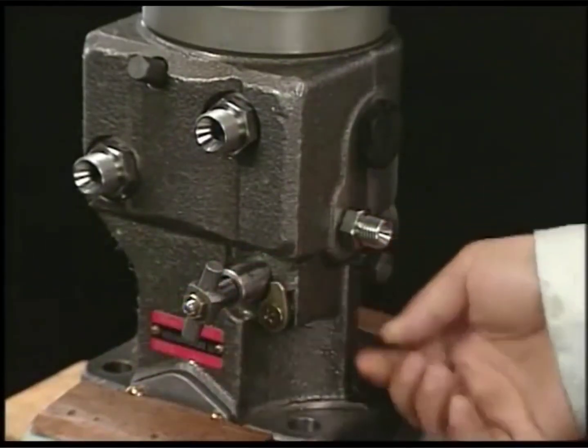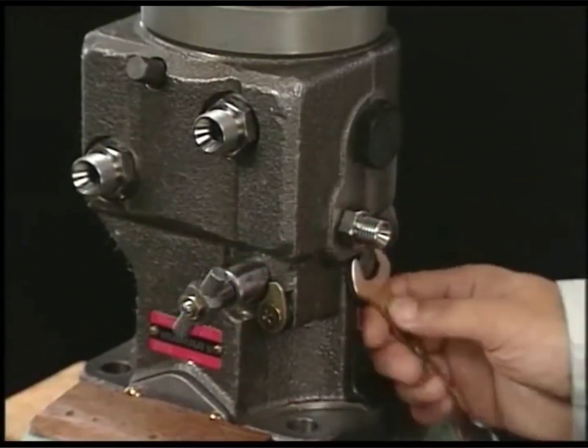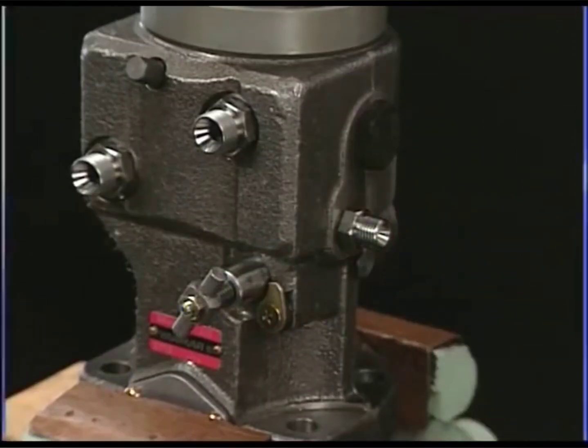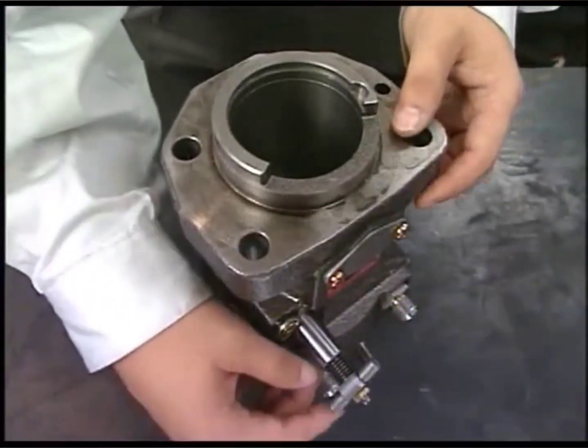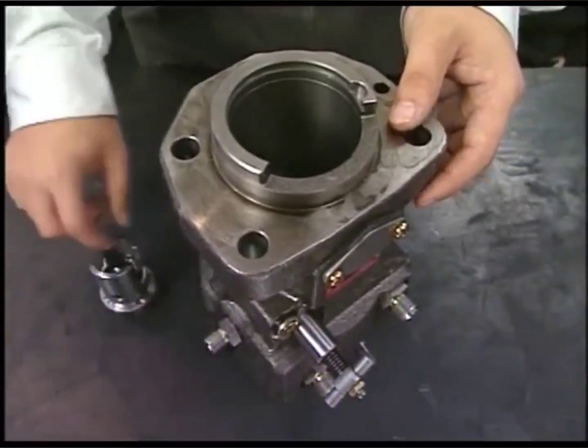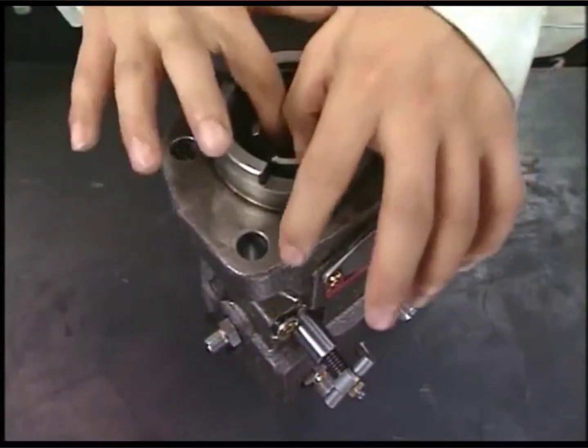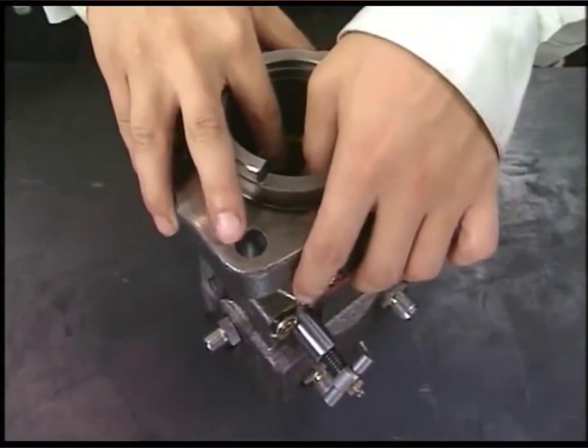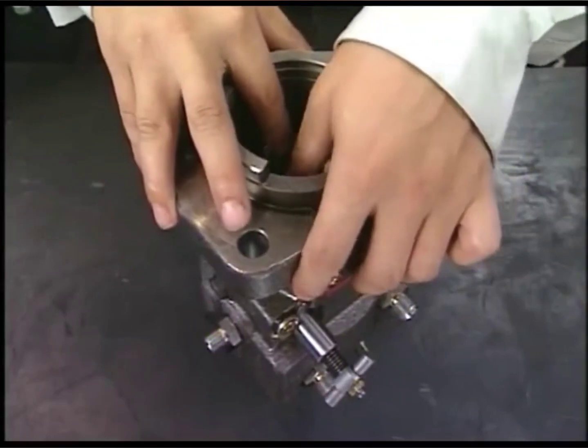Equip the rack and fit the stopper bolt of rack. Turn the pump 180 degrees and install the pinion on the fuel injection pump. At this time, make sure to align the set mark of rack and of pinion.